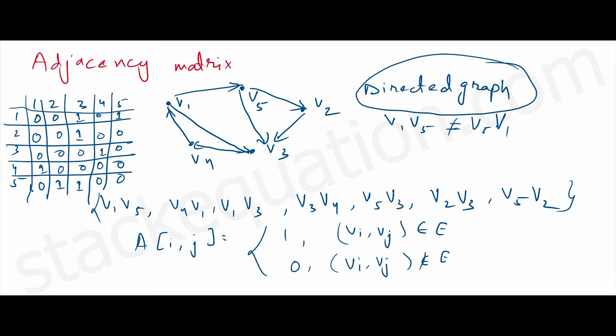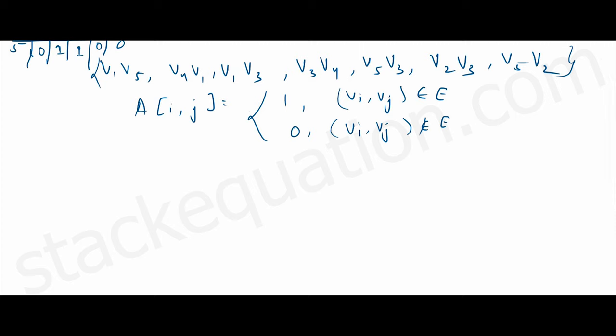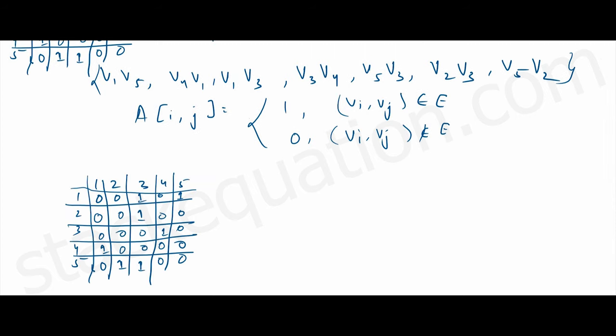What if we represent an undirected graph? In an undirected graph, V1→V5 and V5→V1 are the same thing. So wherever we marked V1→V5 as 1, we also mark V5→V1 as 1. Similarly, V3→V4 is the same as V4→V3, so we mark V4→V3 as 1.